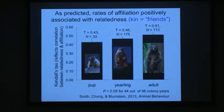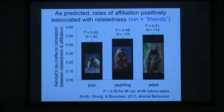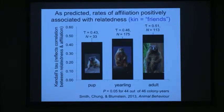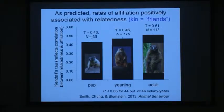Indeed it does, and the pattern is remarkably consistent. I'm showing you 44 out of 46 different colony years — a lot of data. The correlation coefficient is positive and significant, meaning there's a positive relationship between the proportion of genes they share and how often they do these friendly behaviors. This is true at the pup stage when they're born, continues through the yearling stage, and into adulthood — always patterned by how related they are to each other.